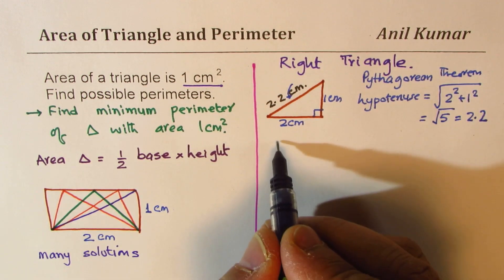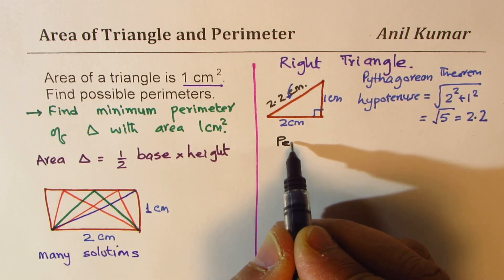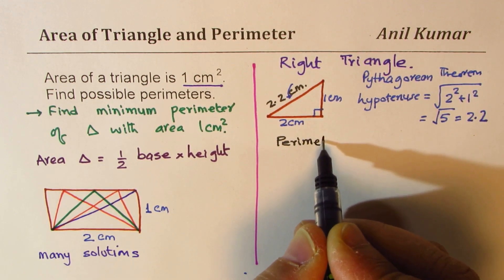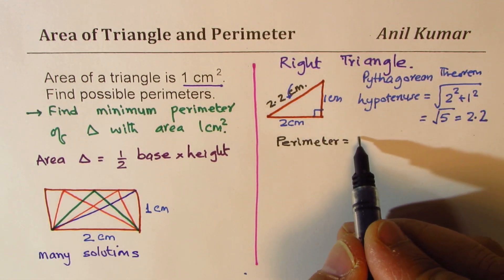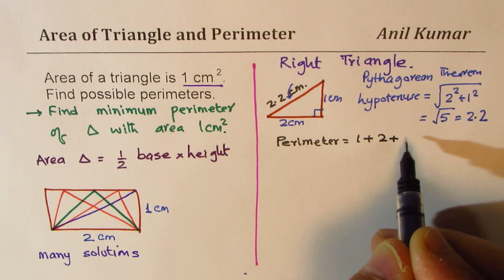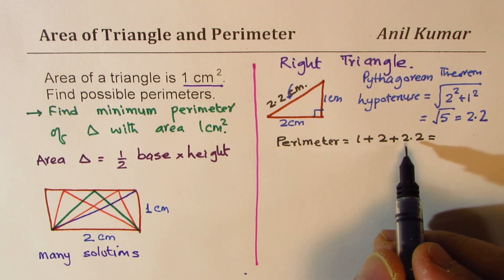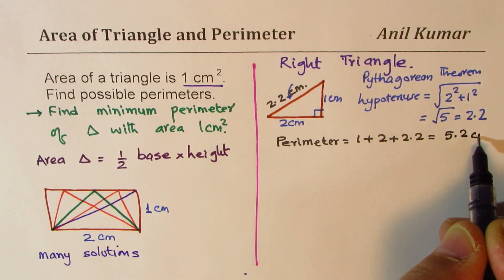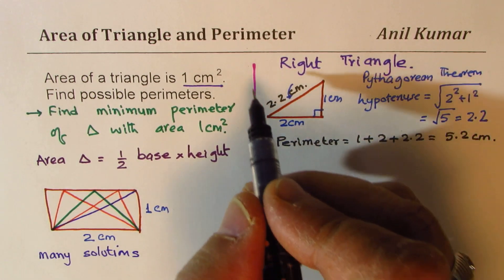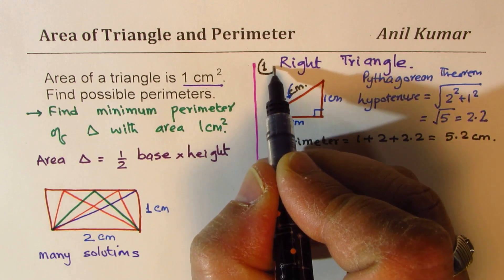Now we can find the perimeter. So the perimeter is sum of all the sides. So it is going to be one plus two plus two point two, which is five point two. So we have found for one case.